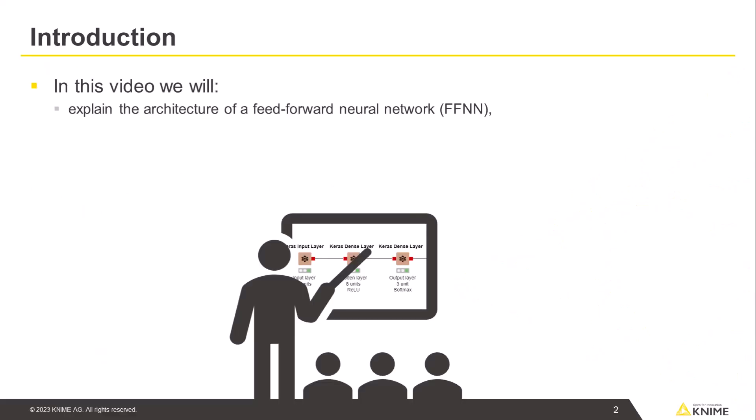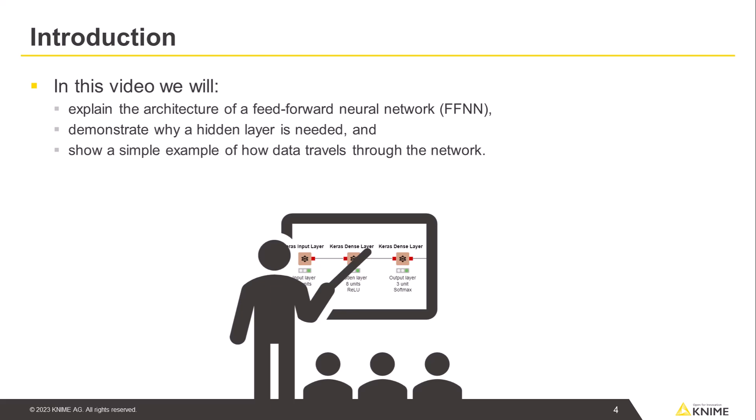In this video, we will explain the architecture of a feedforward neural network, FFNN for short, demonstrate why a hidden layer is needed, and show a simple example of how data travels through the network.